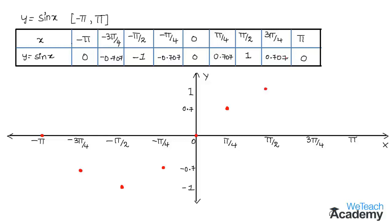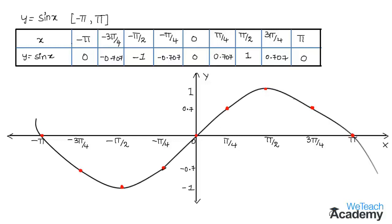For x equal to pi by 2, y equals 1, so we get a point where 1 and pi by 2 meet. For 3pi by 4, the value is 0.707, so we mark that point. For x equal to pi, y equals 0, so the point lies on the x-axis. By joining all these points we get the graph.